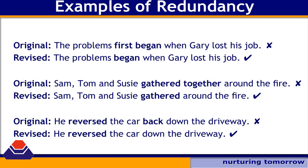Example two: 'Sam, Tom, and Susie gathered together around the fire.' The revised sentence is: 'Sam, Tom, and Susie gathered around the fire.' The word 'together' is redundant because 'gathered' already means to come together, so saying 'gather together' is nothing but repetition.